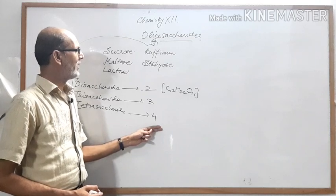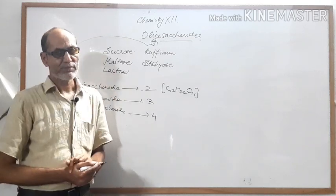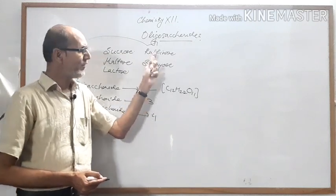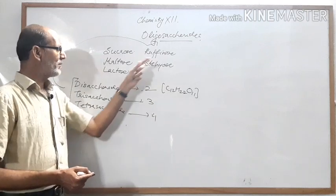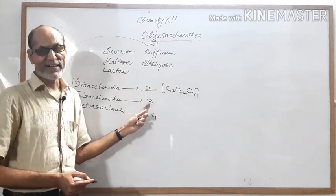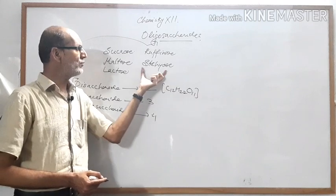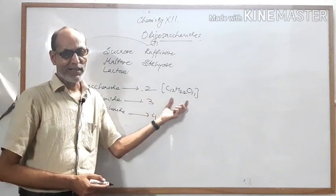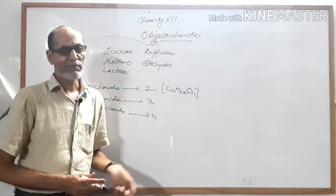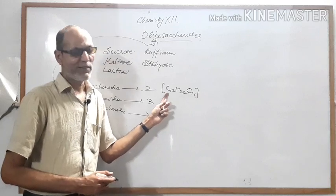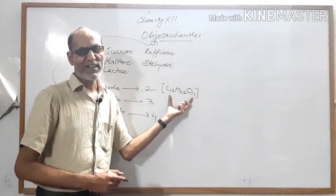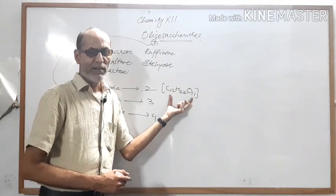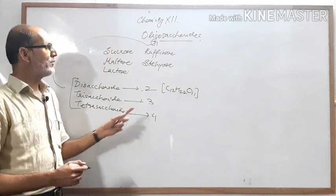Lactose breaks into two monosaccharides. Raffinose is a trisaccharide. Stachyose is a tetrasaccharide breaking into four monosaccharides. For sucrose, the two monosaccharides produced are one glucose and one fructose.